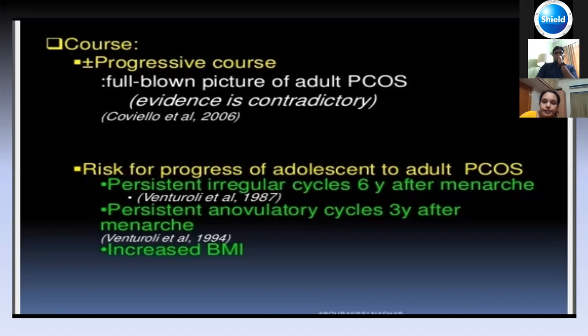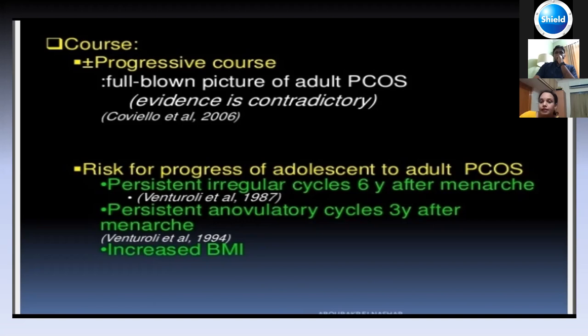These three clinical situations hint that the child might end up with a full-blown adult PCOS picture when she grows up. As traditionally known, PCOS is an endocrinological disorder and the basis was given as increased LH leading to increased testosterone or ovarian androgens.